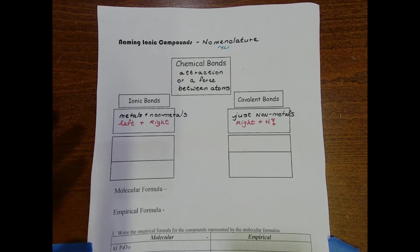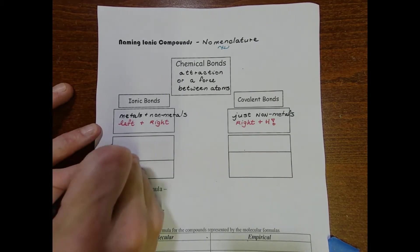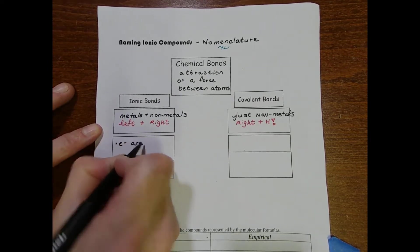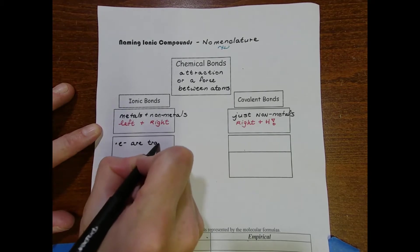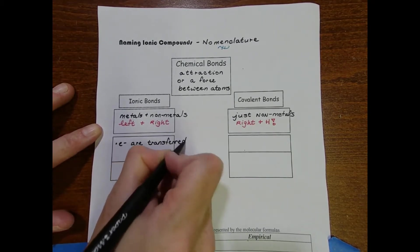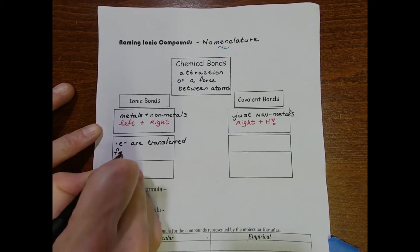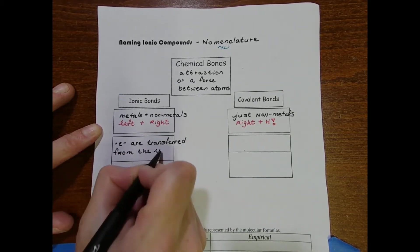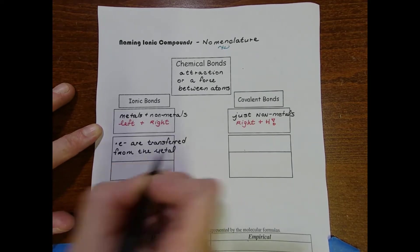For ionic bonds, electrons are transferred from the metal to the nonmetal.